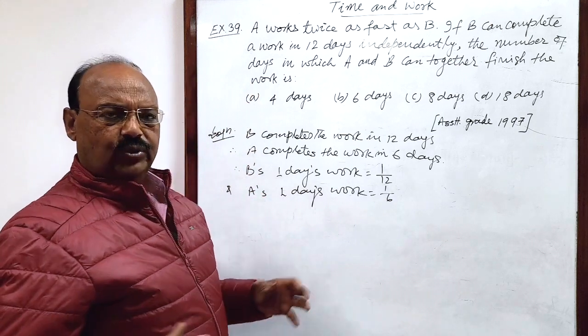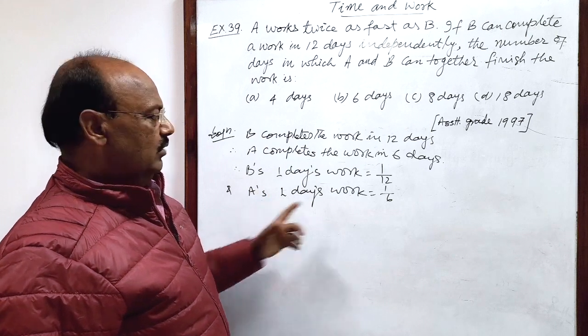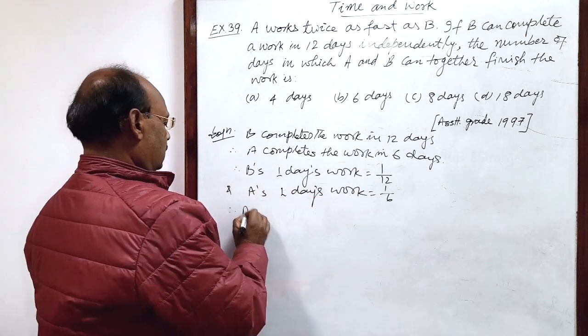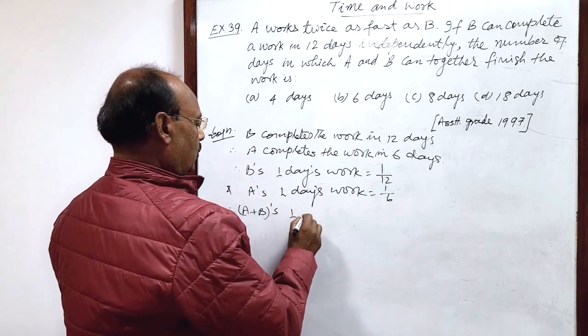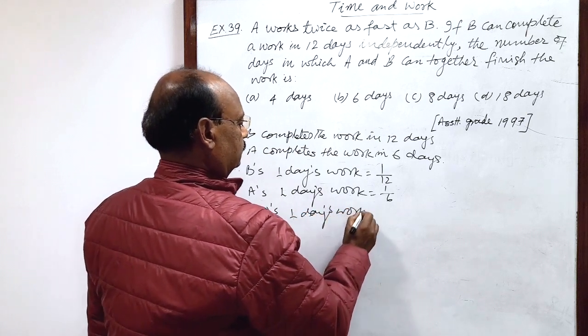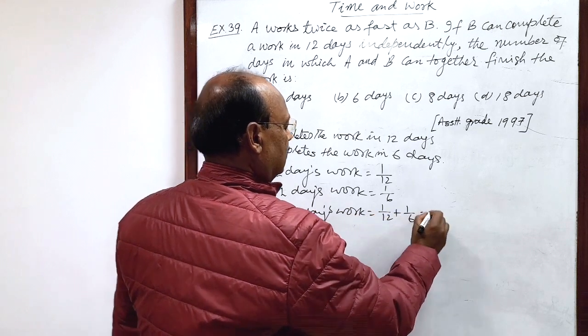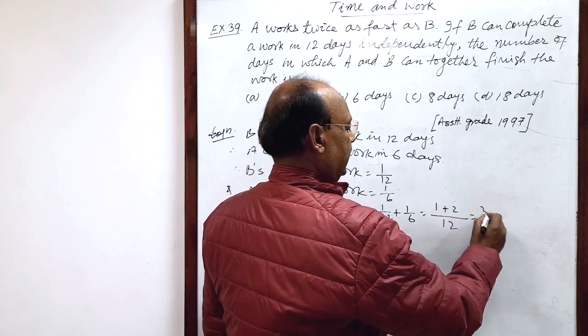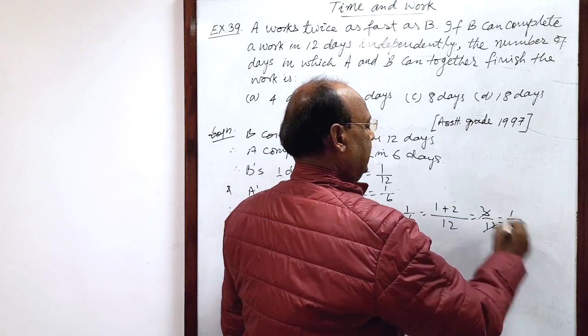And when both work together, amount of work done by them in 1 day will be 1 by 12 plus 1 by 6. Therefore, A plus B's 1 day's work is 1 by 12 plus 1 by 6. Simplify it, LCM is 12, 1 plus 2, that is 3 by 12. This is 1 by 4.